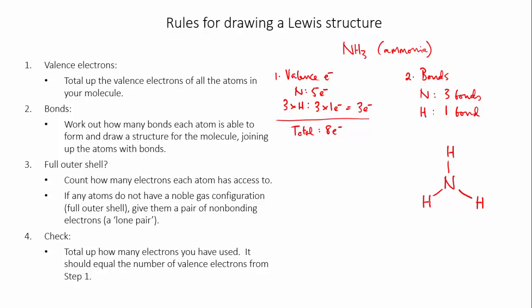The next step is to look at each of the atoms in the molecule and work out if they have a full outer shell once you've taken the shared electrons in the bonds into account. Hydrogen is in the first period of the periodic table, which means it only needs two electrons. Each covalent bond has two electrons in it, so because each hydrogen atom has formed one bond, they each have access to two electrons and have a full outer shell.